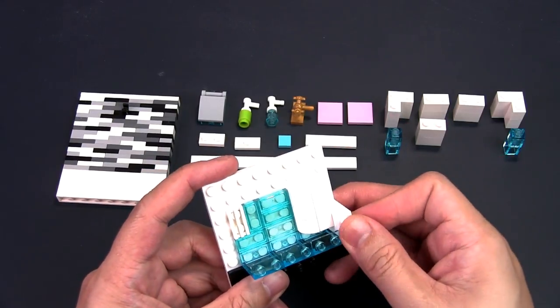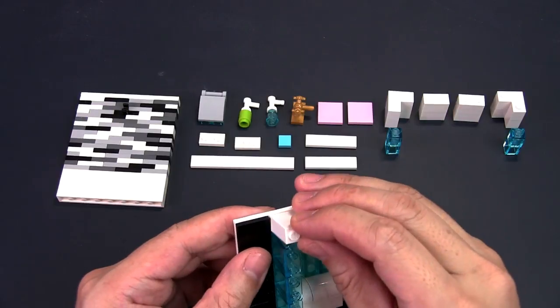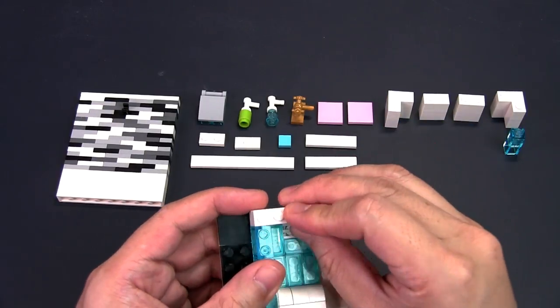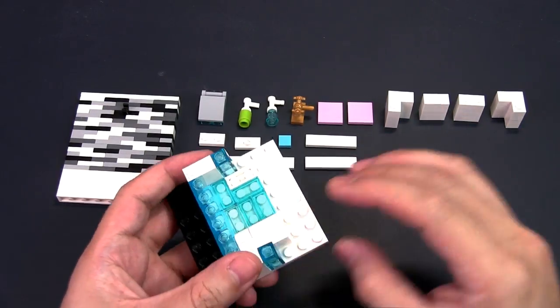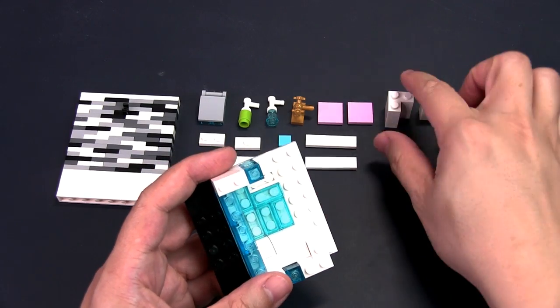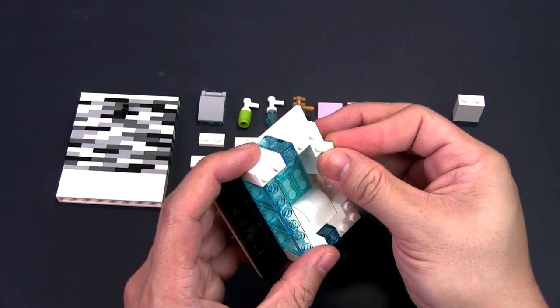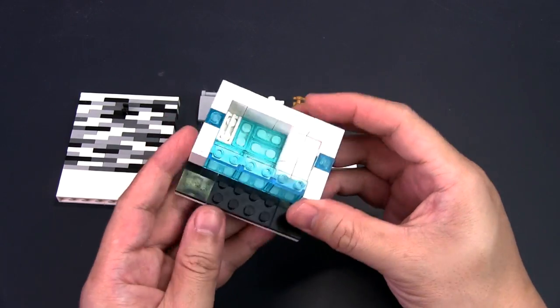Take 2 sets of the 1x2 white bricks and place them in either corner followed by the 2 stacks of the trans-blue 1x1 bricks. Build the corners with the 1x3 corner bricks and add in the remaining 2 stacks of the 1x2 bricks.